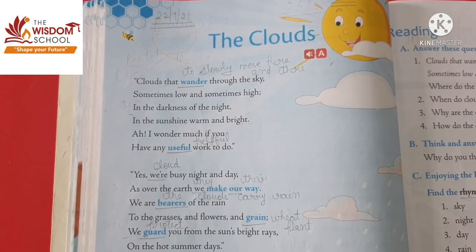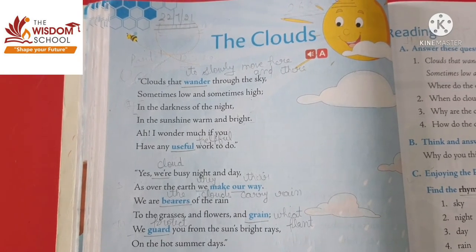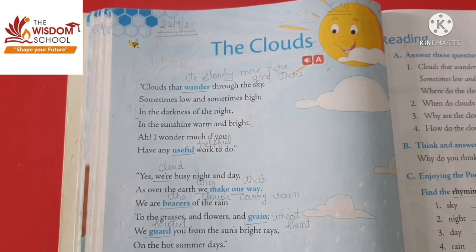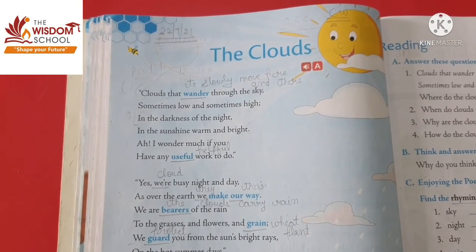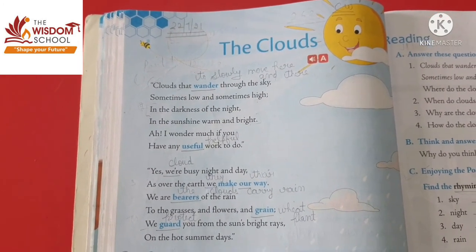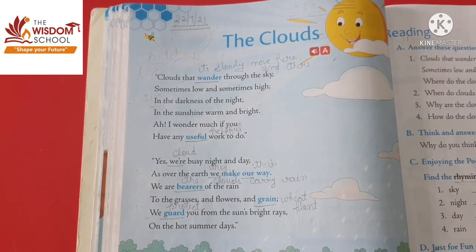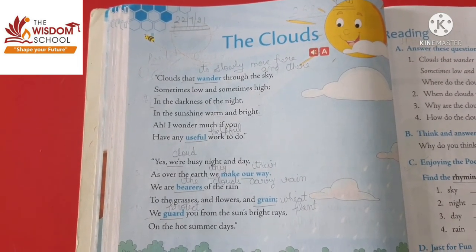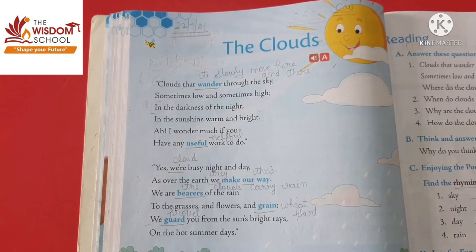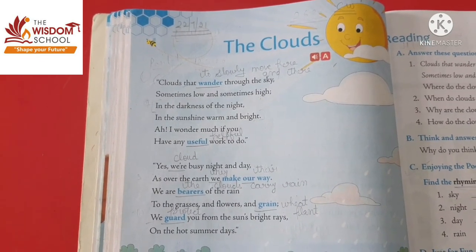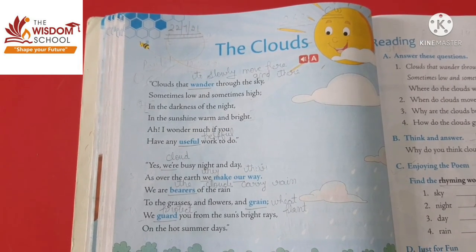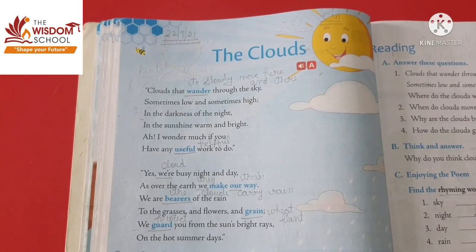Clouds that wander through the sky, sometimes low and sometimes high, in the darkness of the night, in the sunshine, warm and bright. I wonder much if you have any useful work to do. Yes, we are busy night and day, as over the earth we make our way. We are bearers of the rain, to the grasses and flowers and grain. We guard you from the sun's bright rays, on the hot summer days. I hope, students, you have enjoyed our today's poem. Bye-bye and have a nice day.